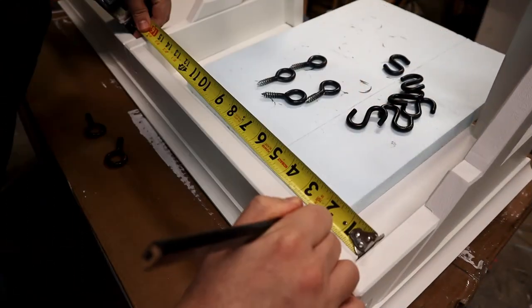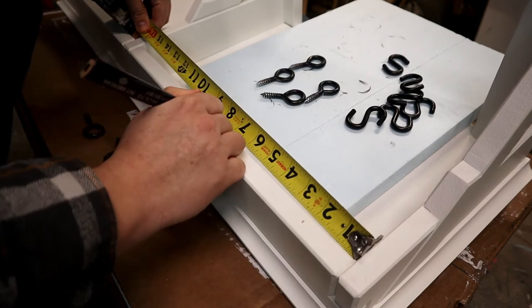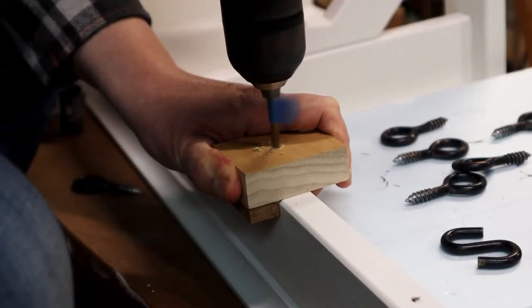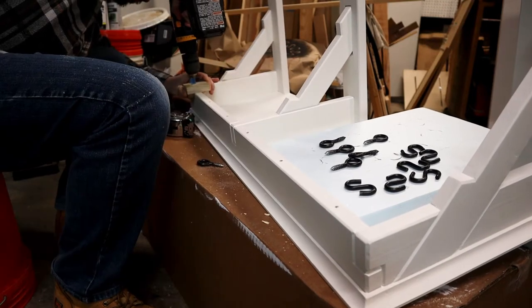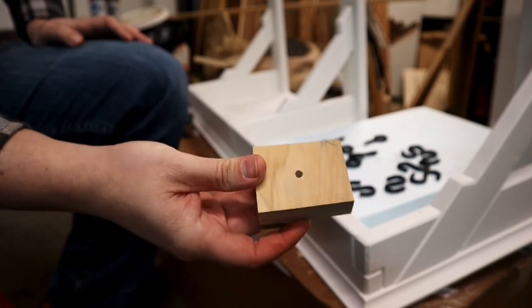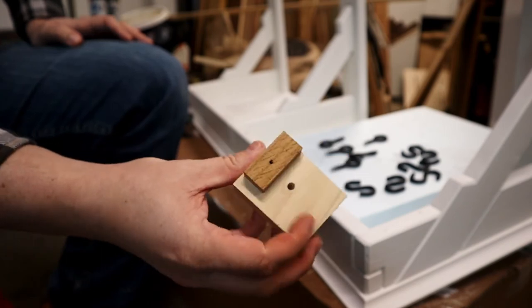I made sure to space the eye hooks about six inches apart, and this is very important, I pre-drilled all of my holes so I don't risk splitting the wood. To make sure the holes are drilled straight, I made a small guide block which helped out a lot in keeping everything consistent.